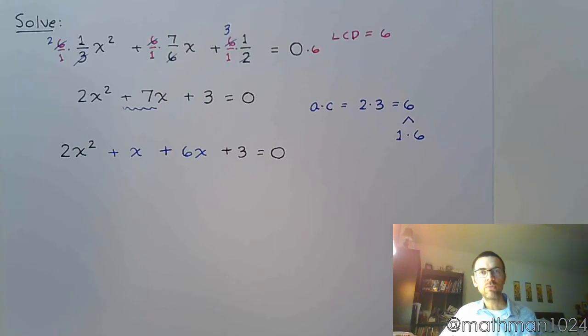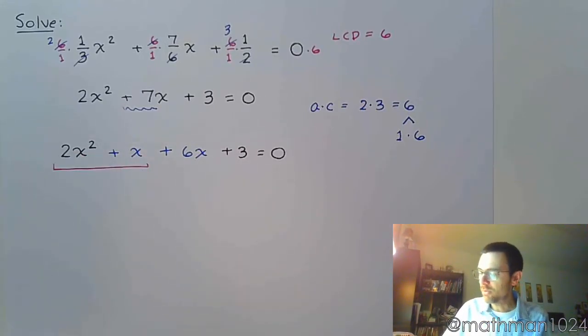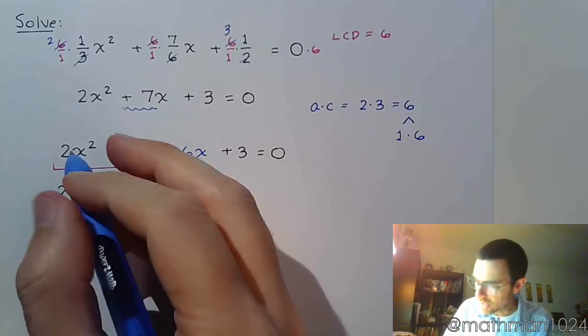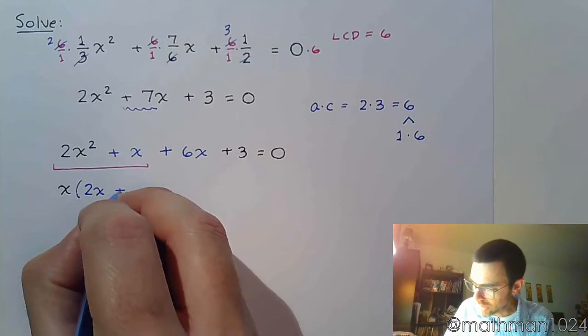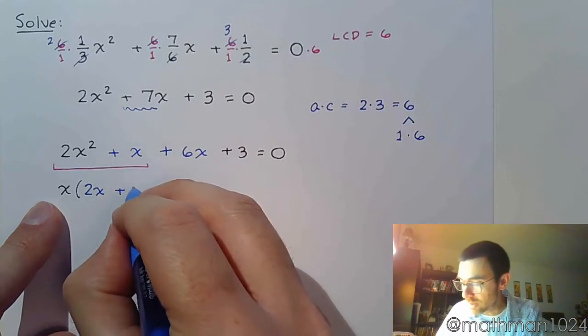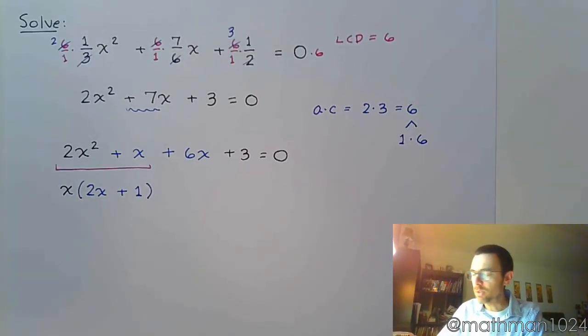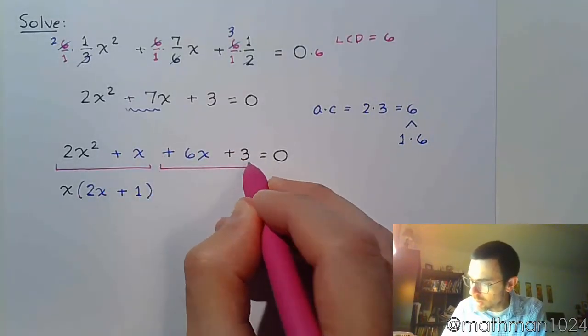So we split up the middle term for the purposes of creating a situation where we can use factoring by grouping. So in this first group, we have a common factor of x. If I factor that out, I've got 2x plus, let's see, this was x. And if I factor out x, the only thing that's left is 1. I think a lot of students forget that there's supposed to be a 1 there, so be very, very careful when you work this problem.